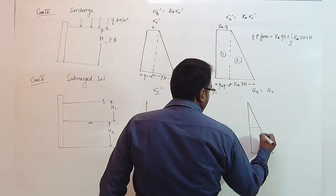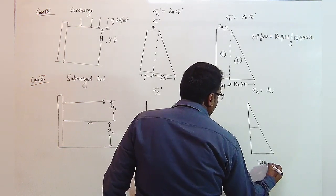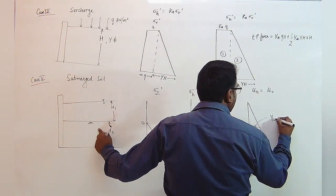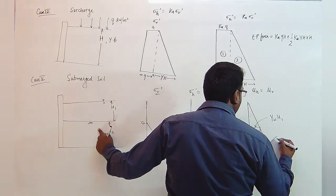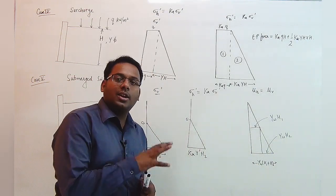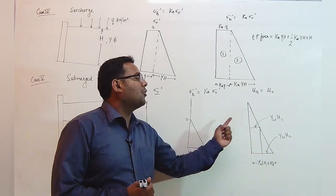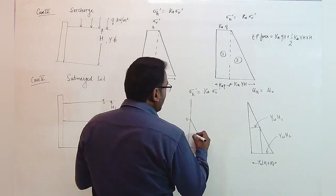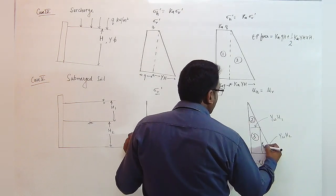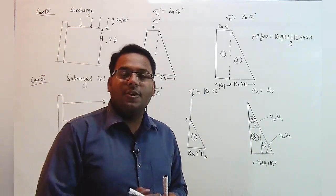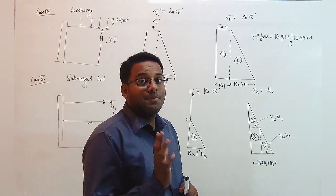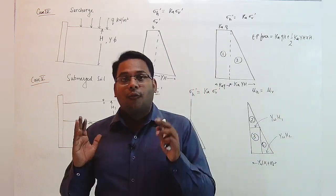The horizontal stress due to pore water pressure increases at the rate of gamma_w. At the bottom it becomes gamma_w · (H1 + H2), for the first layer it is gamma_w · H1, and after that the increase equals gamma_w · H2. You can calculate the total earth pressure force by computing the areas of the diagram, which can be divided into four geometrical figures, and the area for each figure can be easily calculated from the known dimensions.